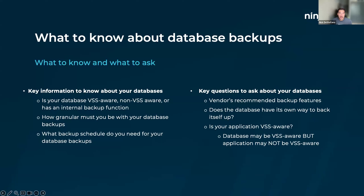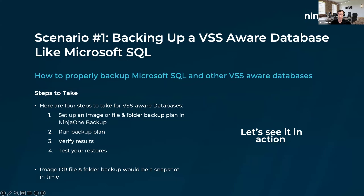With that, I'll hand it over to Jeff to review the first couple of scenarios. For our first scenario, we're covering backing up Microsoft SQL. Thankfully, Microsoft makes this very easy because they have VSS — the Volume Shadow Copy Service — which allows us to back up files that are actively in use safely. Because Microsoft SQL supports VSS, we'll talk about how NinjaOne, which is VSS aware, is able to back up those files in their current state.